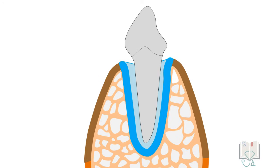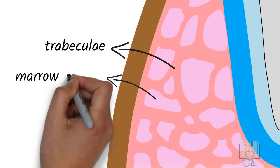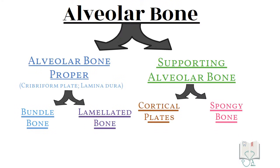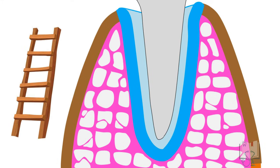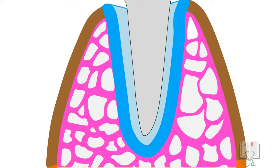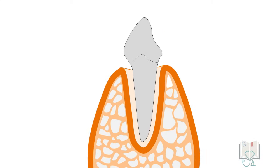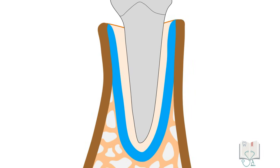Spongy bone. The area between the cortical plates and the alveolar bone proper is filled with spongy bone. It is formed of trabeculae of lamellar bone present between marrow spaces. Depending on the arrangement of trabeculae, alveolar bone can be of two types — Type 1 and Type 2. In Type 1, the trabeculae are regular and horizontal in arrangement, giving a ladder-like appearance. In Type 2, the trabeculae are more irregularly arranged. Type 1 is more commonly seen in the mandible, whereas Type 2 is more common in the maxilla. In the anterior maxilla and anterior mandible, the spongy bone may be absent, such that the alveolar bone proper is directly fused with the cortical plates.